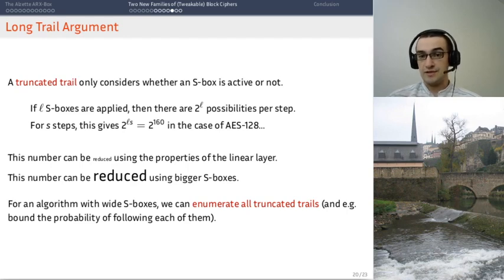And what you can do, for instance, and that's the idea of the long-trail strategy, is to enumerate all trails, and then for each of them, you compute a bound on the probability of the differential, and then you pick the worst bound you have found over all the possible trails, and that's a bound for the whole cipher. That's the idea of the long-trail argument.